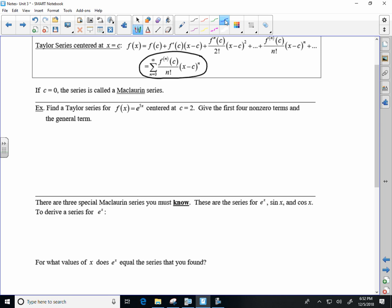Find a Taylor series for f of x equals e to the 5x centered at c equals 2. So I'm going to need some derivatives. So let me do f prime of x. It's going to be 5e to the 5x. Then f double prime of x is going to be 25e to the 5x.